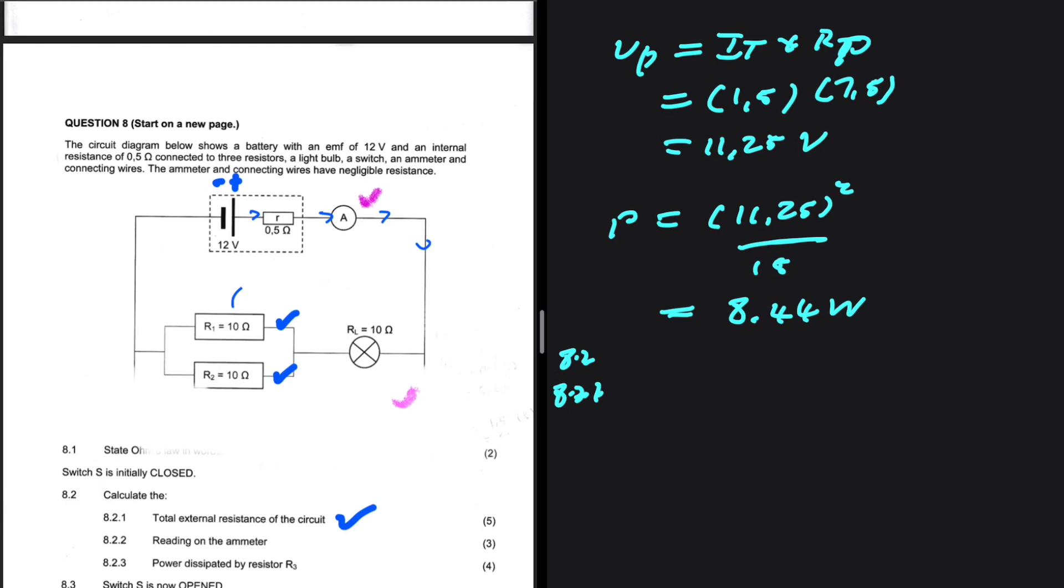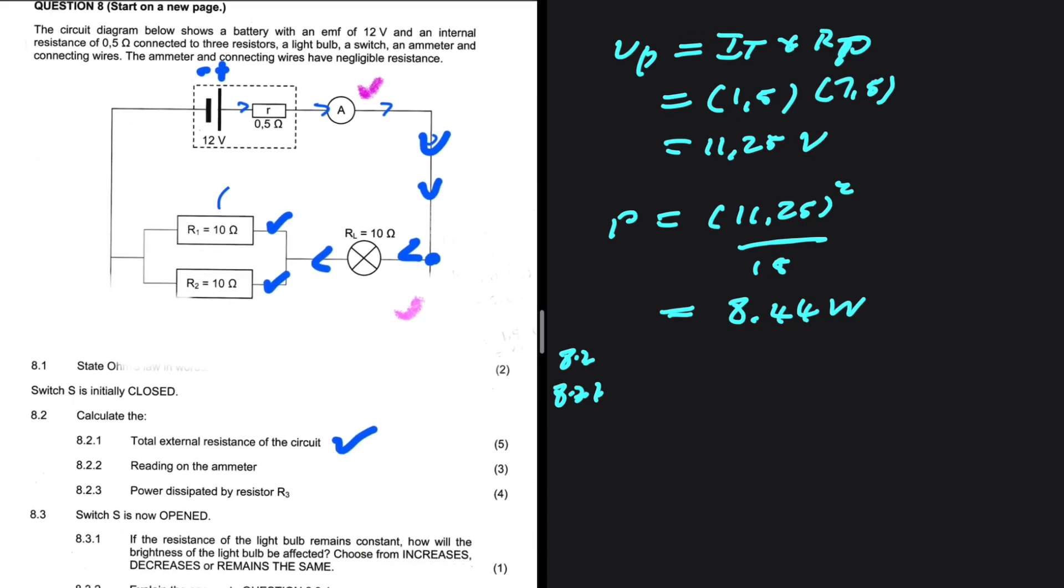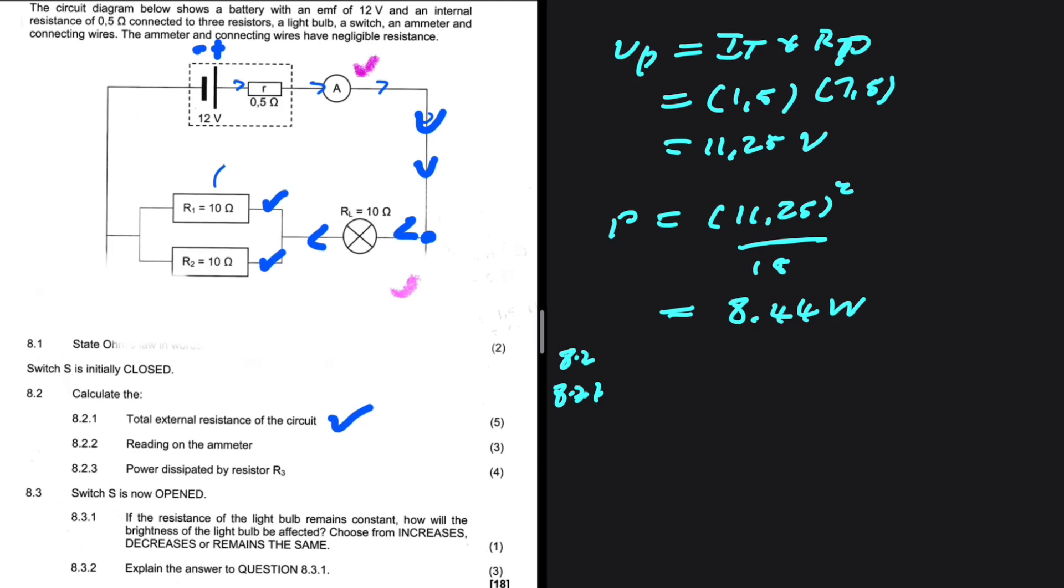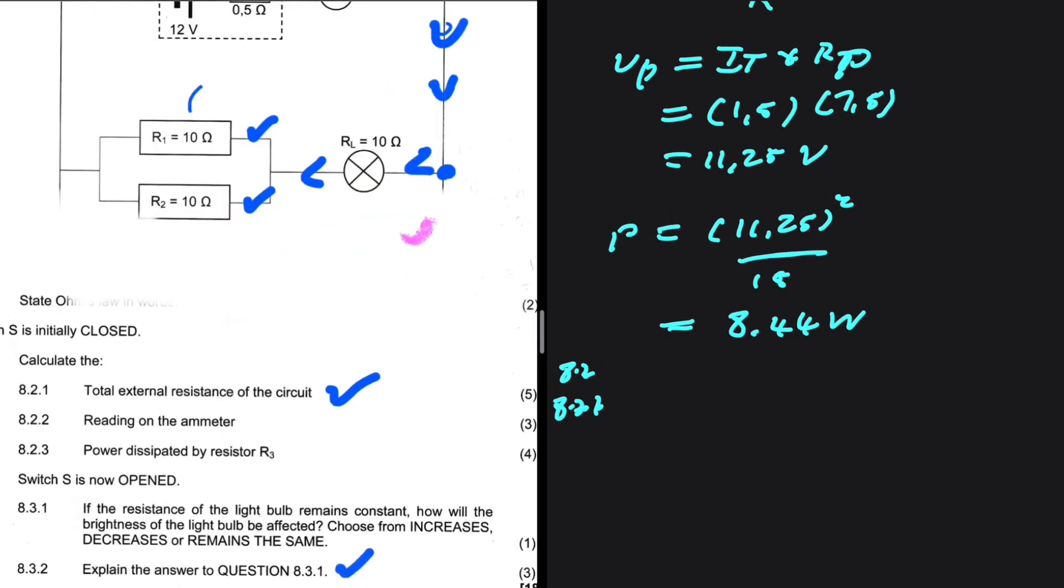All the current is flowing through this path. It's not going to divide at this point anymore. What does our question say? If the resistance of the light bulb remains constant, how will the brightness of the light bulb be affected? Choose from increase, decrease or remain the same. Explain the answer to question 8.3.1.